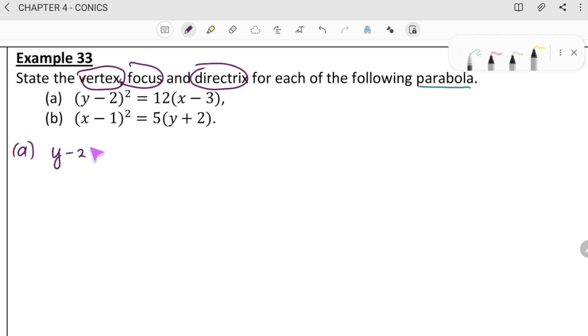Okay, y minus 2 squared equal to 12x minus 3. So, you can look at the two hints. The first one is y is squared. So, it's open left or open right. And this is positive. So, obviously, it will open to the right.